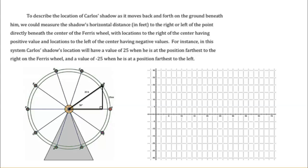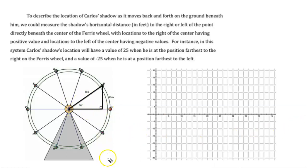Thinking back to our previous Ferris wheel, we know the radius is 25, the height above the ground is 30, and it takes 20 seconds to do a full rotation — the same Ferris wheel we've been working with. Now we want to think about where his shadow will be on the ground. If he's at point A, where T equals zero, his shadow falls right here on the ground.